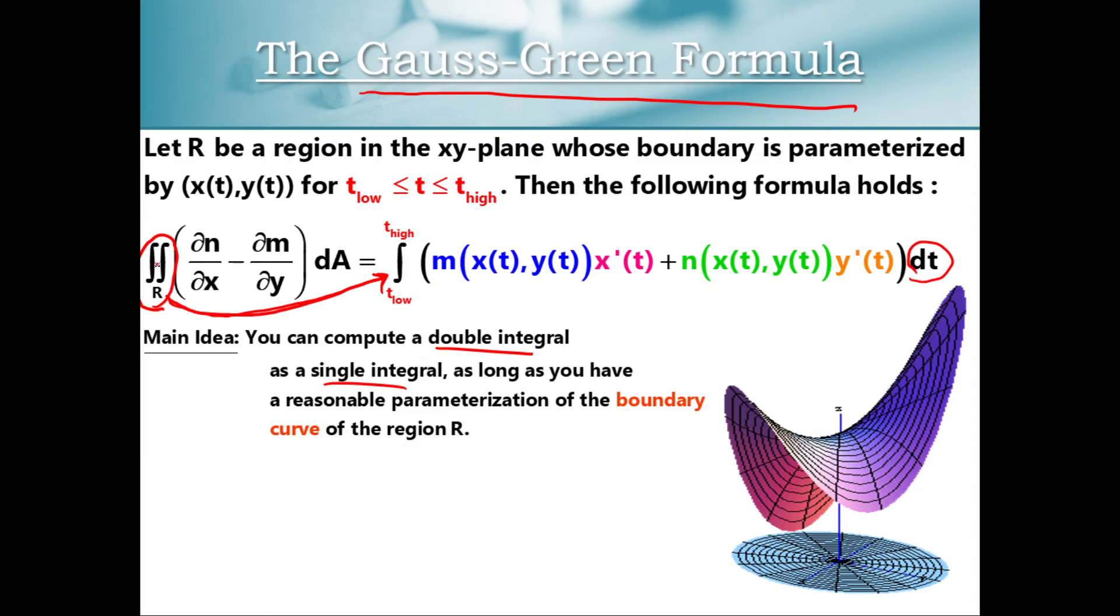And when we get to the chapter where we start learning about vector fields, we're going to need all the pieces of this equation. But for now, all we really need to notice is, first of all, this formula is true. There is a proof of it at the end of my notes for this chapter. But second of all, we notice that this is a way of turning a double integral that perhaps might be difficult to compute into a single integral that maybe might be a little bit easier to compute.